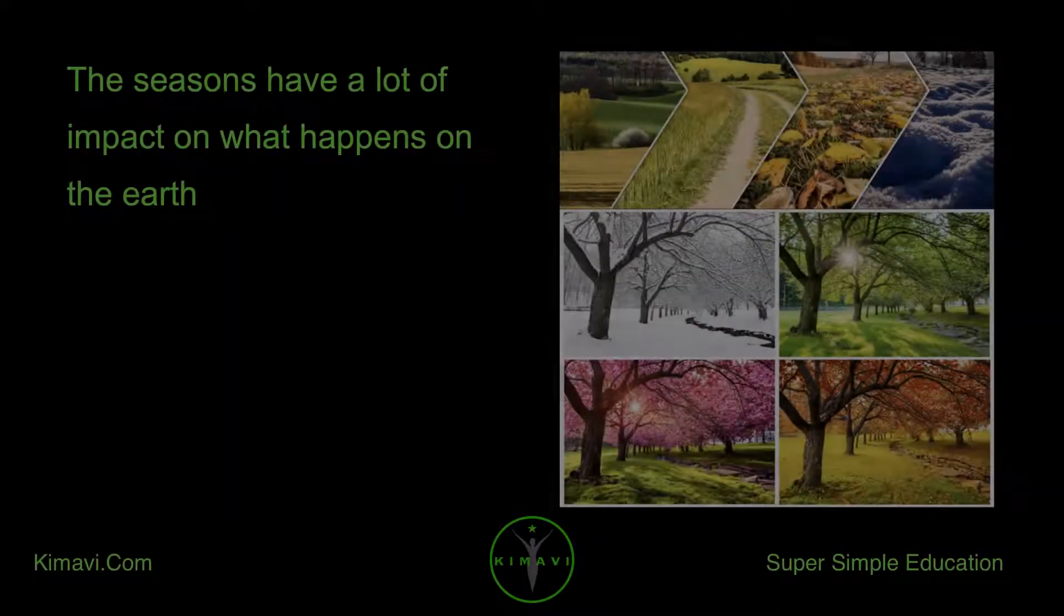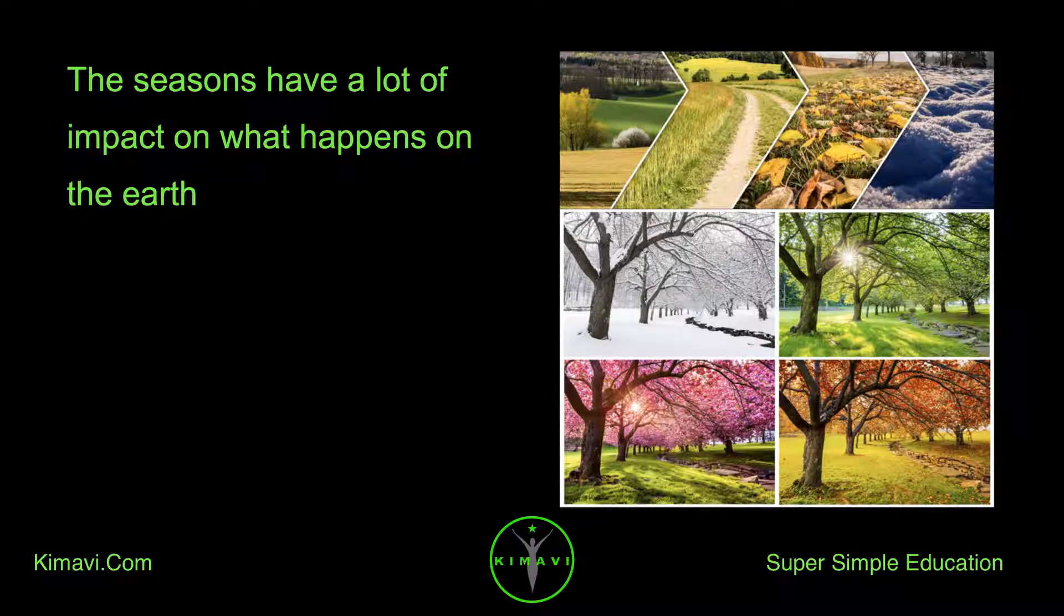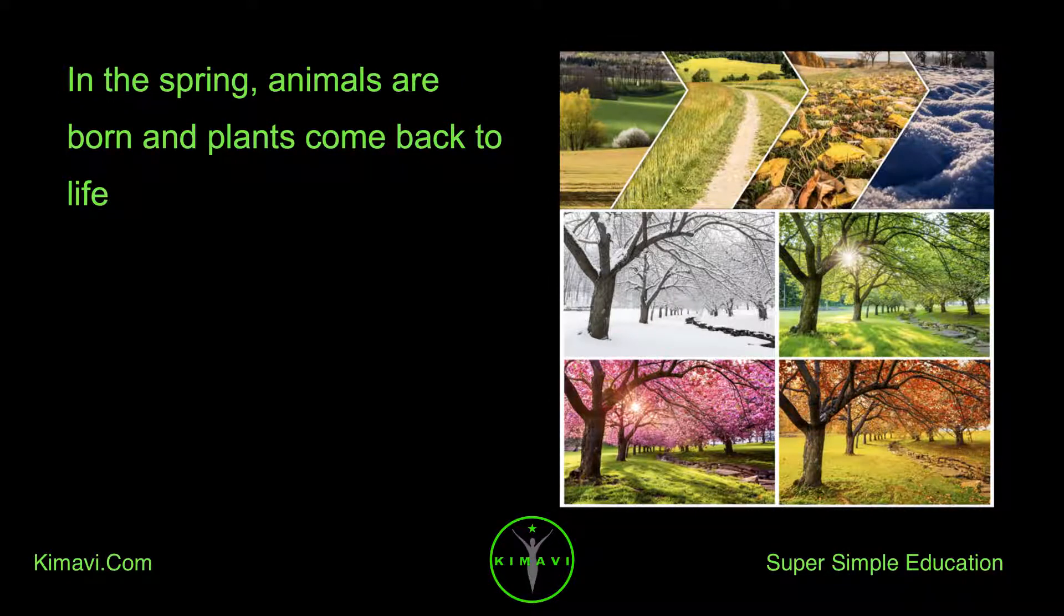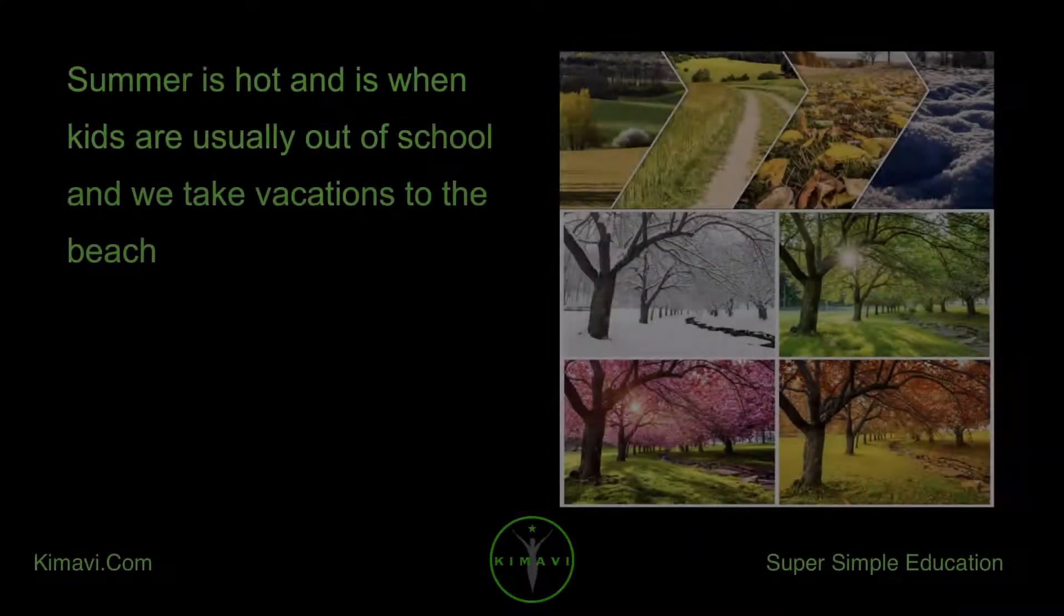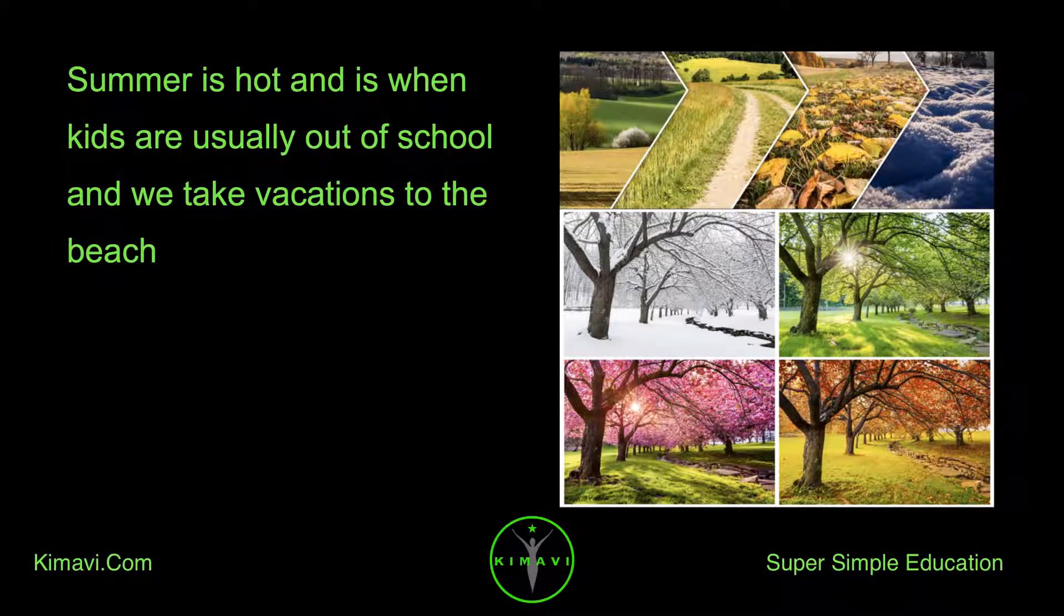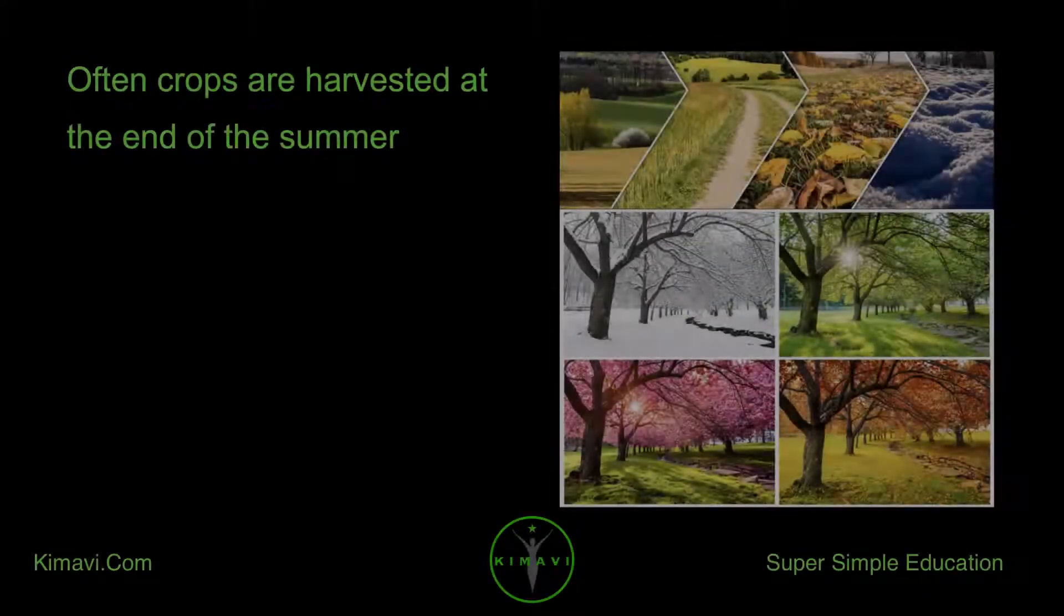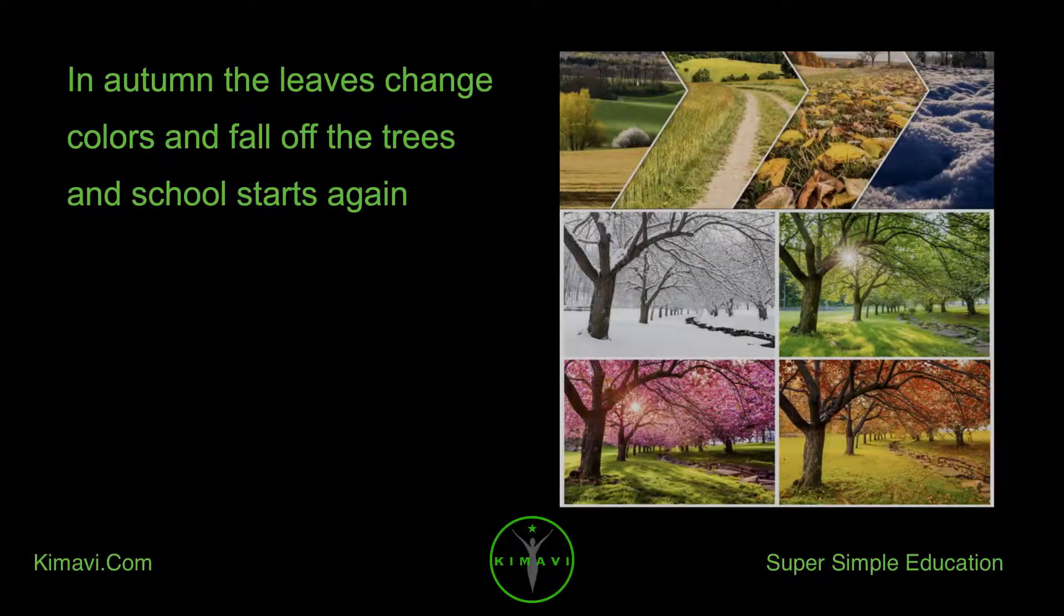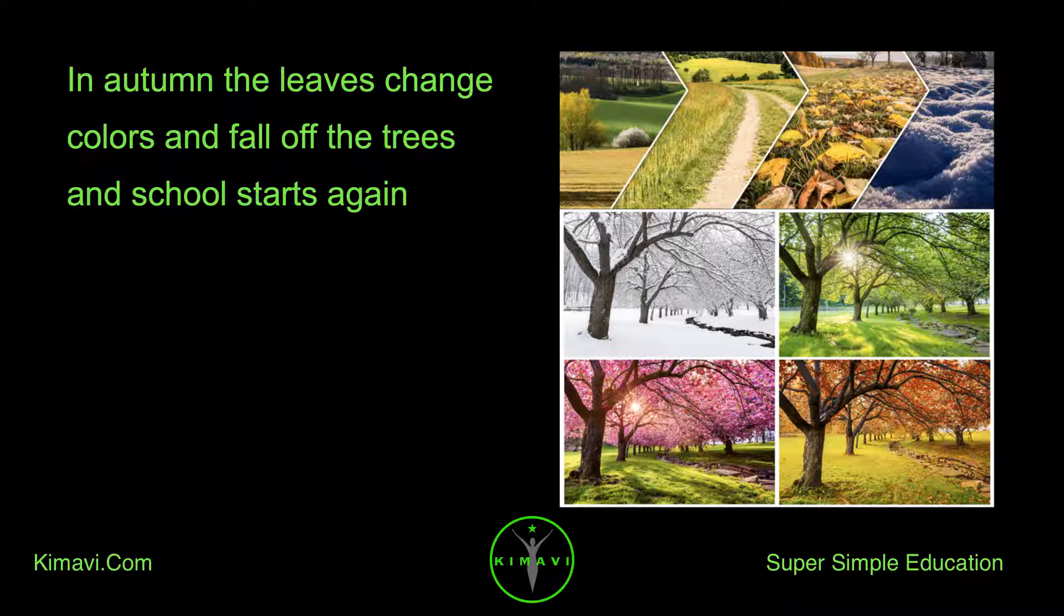The seasons have a lot of impact on what happens on the Earth. In the spring, animals are born and plants come back to life. Summer is hot and is when kids are usually out of school and we take vacations to the beach. Often crops are harvested at the end of the summer.